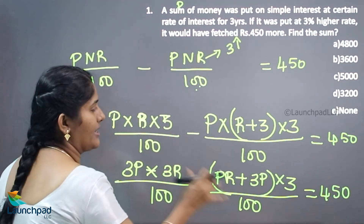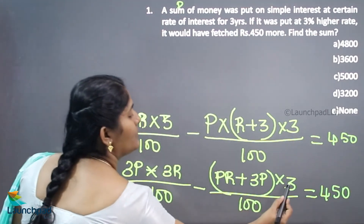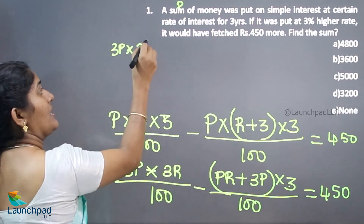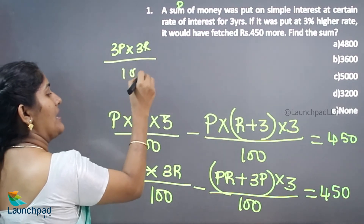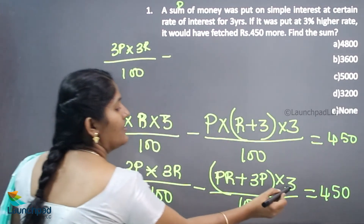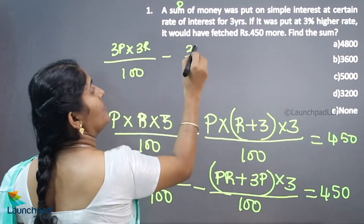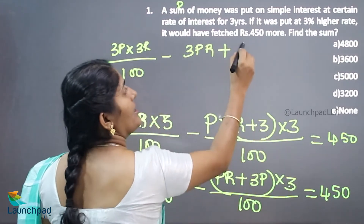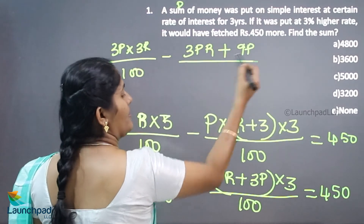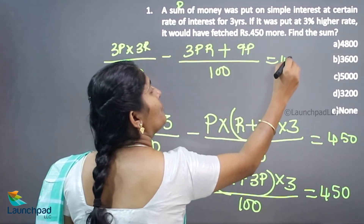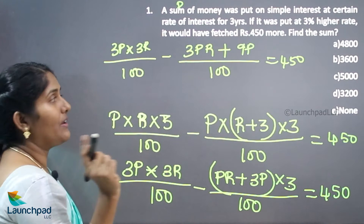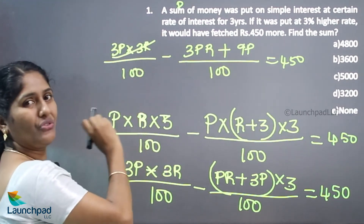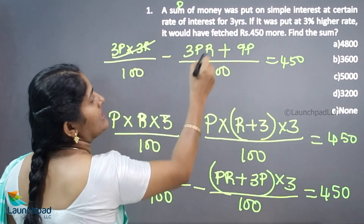Equating again: three P times R divided by 100 minus three times (PR + 3P) times 3 divided by 100, which is equivalent to 450. Expanding: 3PR divided by 100 minus (3PR + 9P) divided by 100 equals 450. The 3PR terms cancel each other out.